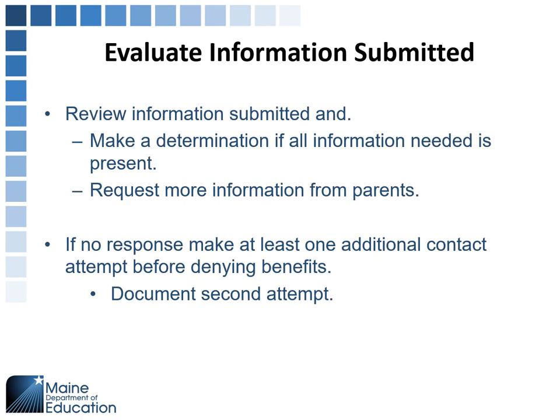Once you've got the information back, review it. Make a determination if all information needed is present. If you need more information, request it from the parents — you can call them. Tell them what you need and give them a specific timeframe: a couple of days from the phone call. For example, call on November 1st and ask for information — please call back by November 3rd. On November 4th, take the next step.